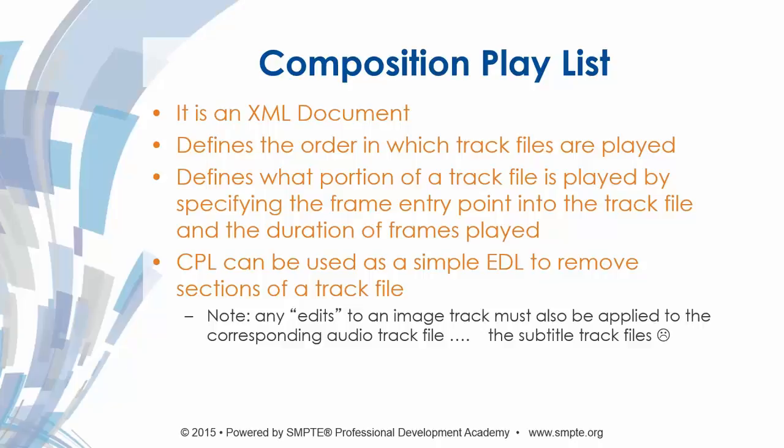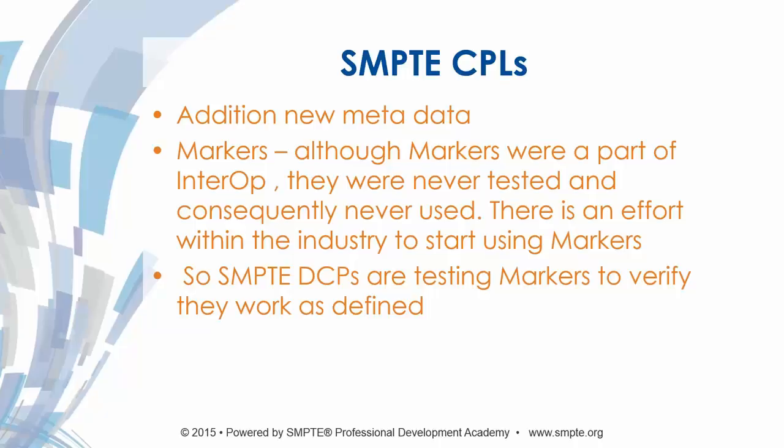Composition playlists define the order and portions of how track files are played out and can be used as a simple edit decision list. These functions still reside in both SMPTE and Interop. SMPTE CPLs have additional new metadata to help with GUI interfaces and other areas. They also have markers — like first frame of action and start of credits — which were also part of Interop but never really used or tested. There's an effort in the industry to take advantage of this feature for automation at theaters. Part of the SMPTE DCP testing process is to verify that the markers are working as defined.